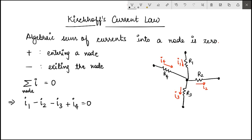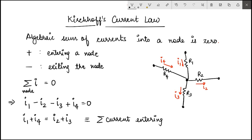This is another way of saying that I1 plus I4 equals I2 plus I3. That means the summation of currents entering a node equals the summation of currents exiting the node. This follows simply from conservation of charge — whatever current is entering a given node, the same must be exiting that node.